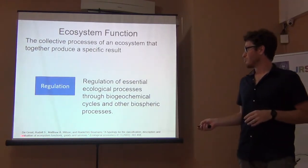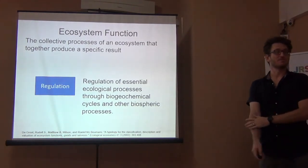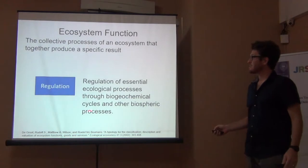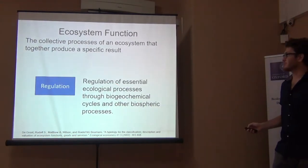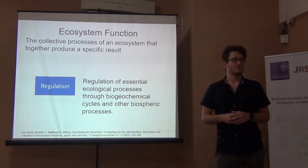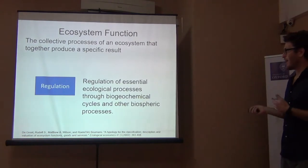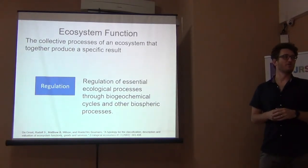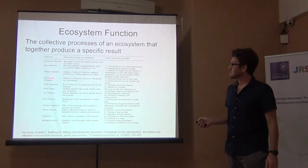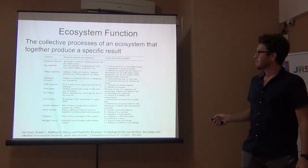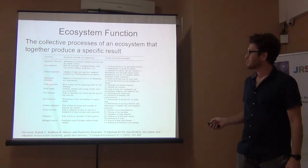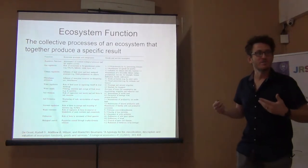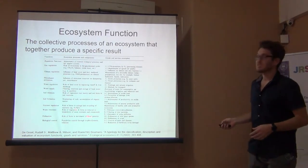According to Rudolf de Groot, one of the authorities on ecosystem services who has led the field over the years, these are defined into four main categories. The biggest is regulation — the regulation of essential ecological processes through different interactions, biogeochemical cycles, and other processes. This includes a long list: gas regulation, climate regulation, disturbance prevention, water regulation, soil retention, soil formation, nutrient regulation, and pollination — all functions of the ecosystem that result from these processes.